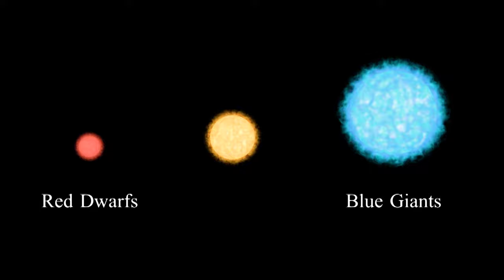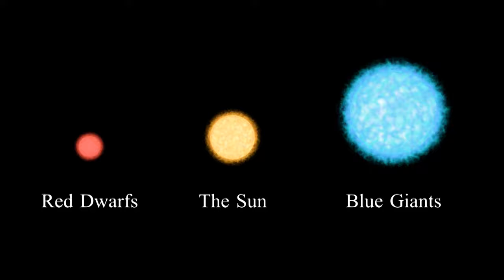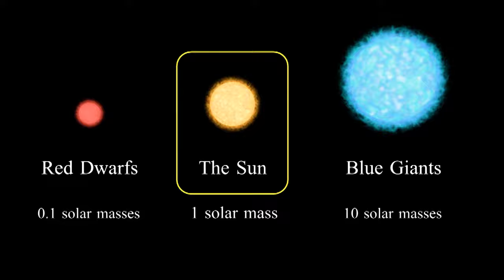Between these two extremes is my favorite star, the sun. The sun is a yellow, medium-sized star. In these videos, we're going to measure things based on the sun. We'll measure mass in terms of solar mass, where one solar mass equals the mass of the sun.